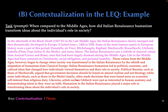Here's an example — same prompt about the impact of Italian Renaissance humanism. The contextualization is in pink/fuchsia and the thesis is in red. 'In the aftermath of the Black Death and in the late Middle Ages, the Italian Renaissance slowly emerged and then dynamically developed in Europe. It lasted from approximately 1400 to 1550. Some of the most famous names in European history were part of the period — Donatello, Da Vinci, Michelangelo, Raphael, Machiavelli, Brunelleschi, Ghiberti, Isabella d'Este, the Medici, and many others. The Italian Renaissance saw a rebirth of classical values from ancient Greece and Rome, ones that had been largely dormant during the Middle Ages. Life in the Middle Ages had been centered on Christianity, social obligation, and personal humility.' That sets up the thesis statement beautifully — and notice this contextualization has specific examples in it.